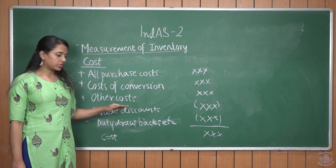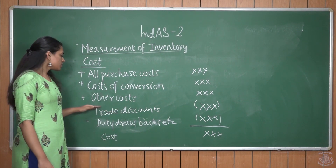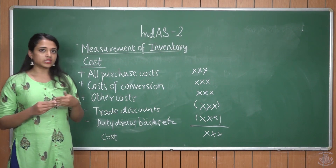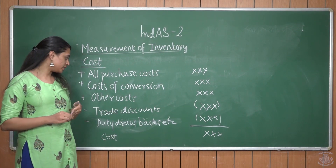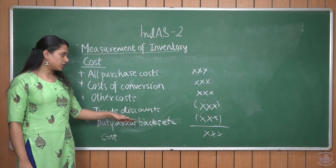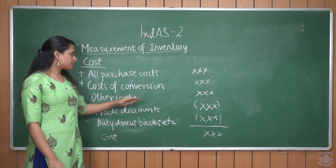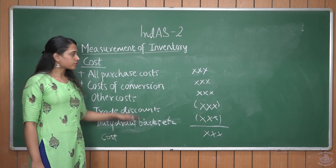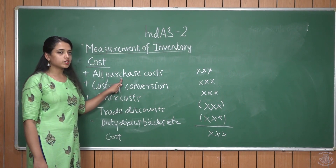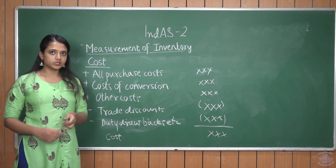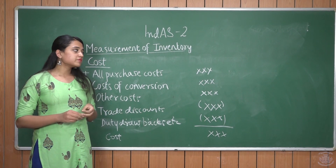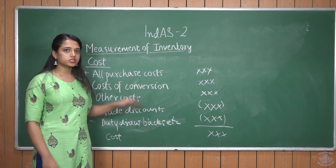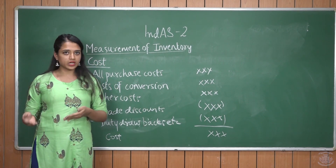Other costs include transportation charges. From this, we deduct trade discounts, if any, given by the supplier of raw materials, and duty drawbacks, if any. When we subtract these, we arrive at the cost of inventory. Purchase costs also include non-refundable taxes and duties. Refundable taxes and duties cannot be included because they can be recovered later.